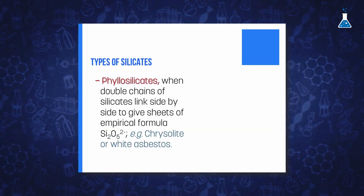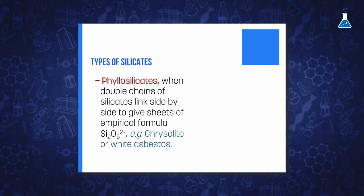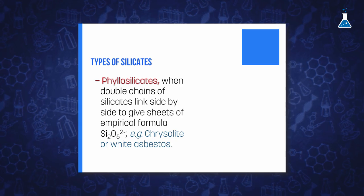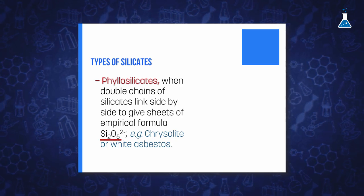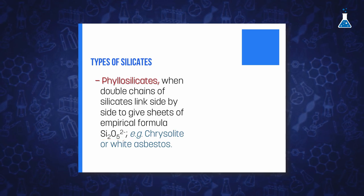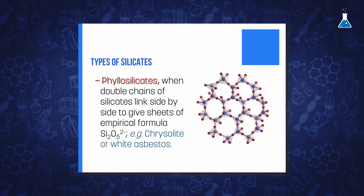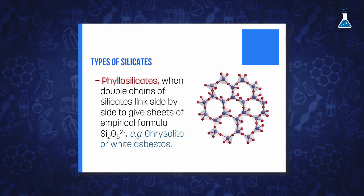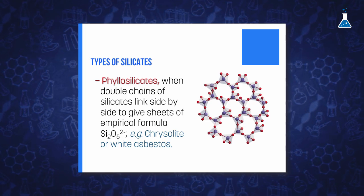Alternatively, if double chains of silicates link side by side and give sheets of empirical formula Si2O5^2-, we have phyllosilicates. For example, chrysotile, a magnesium mineral which is known as white asbestos.